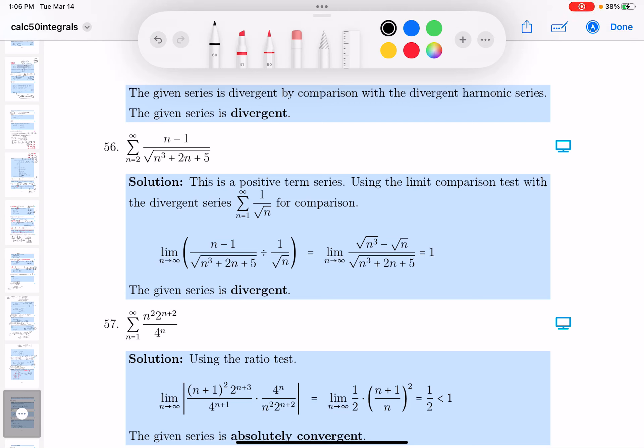Okay, looking at it, I'm going to say as n gets really large, the top roughly looks like n, and the bottom roughly looks like the square root of n cubed.